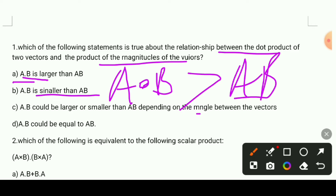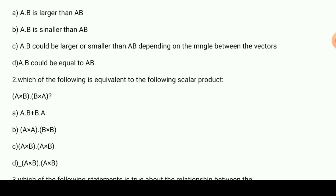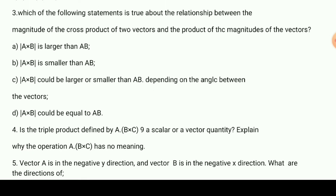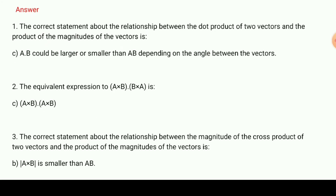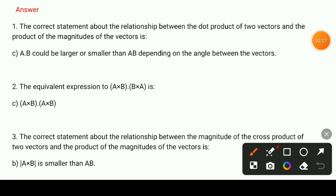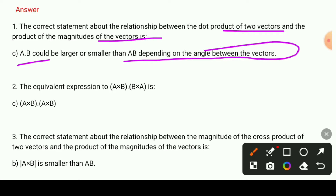The answer depends on the angle between the vectors. The dot product can be equal to, larger than, or smaller than the product of the magnitudes — it can be larger or smaller, depending on the angle. So the relationship is not fixed; it changes depending on the angle.